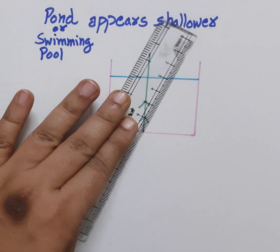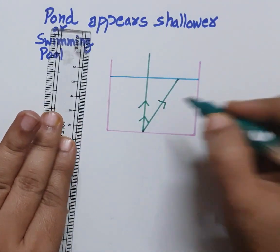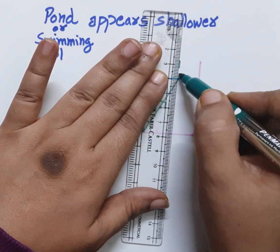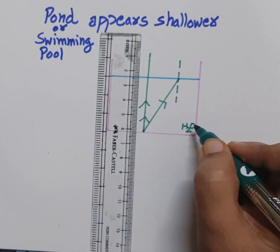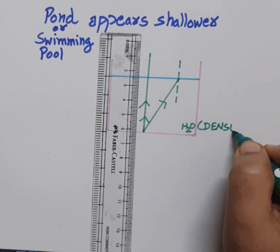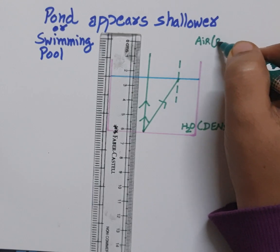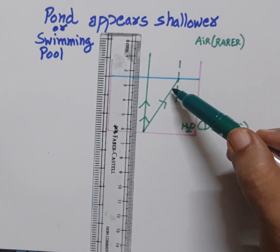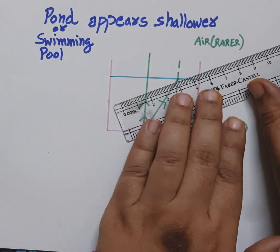Another ray we will draw obliquely from the same point. At this point we have to draw the normal also. This is the normal. We know that this medium is water, which is a denser medium, and outside this is air, which is a rarer medium.